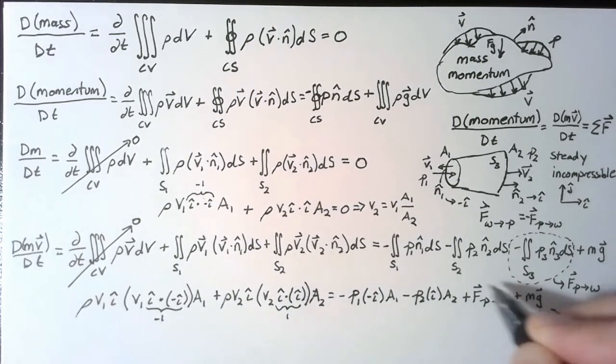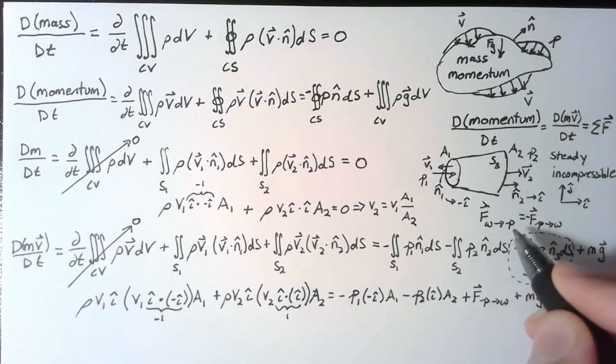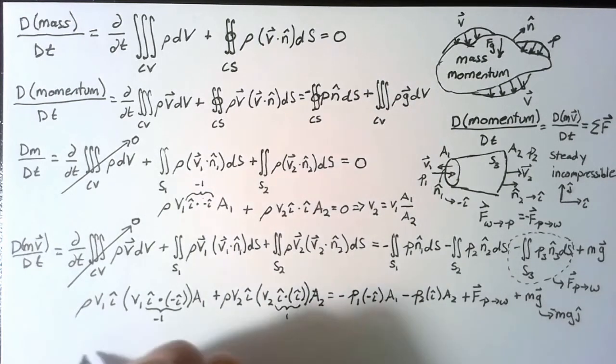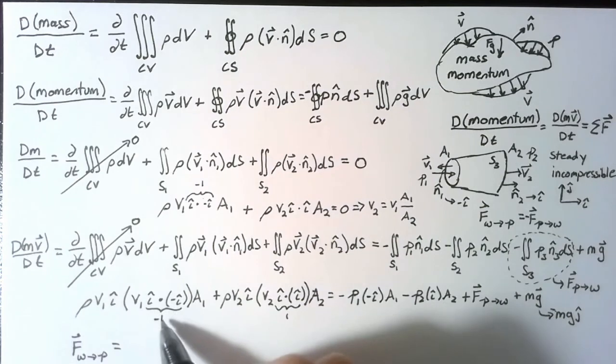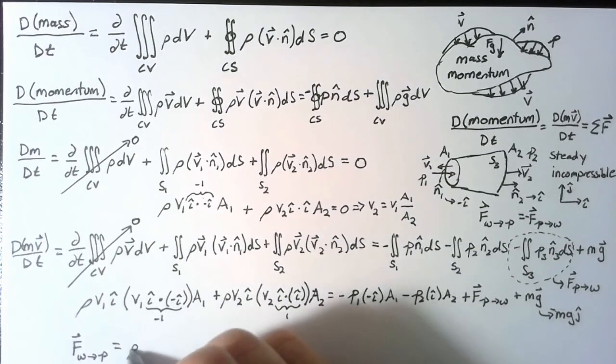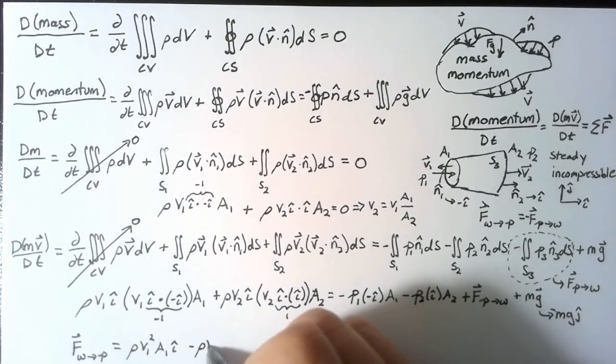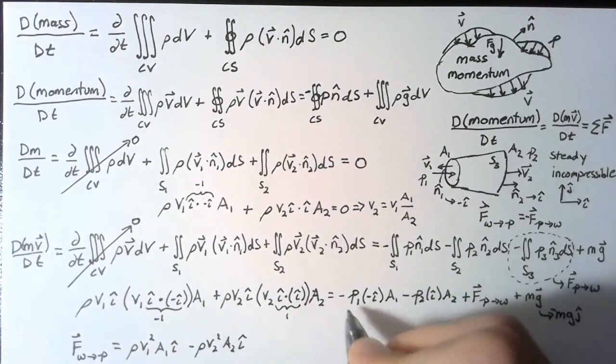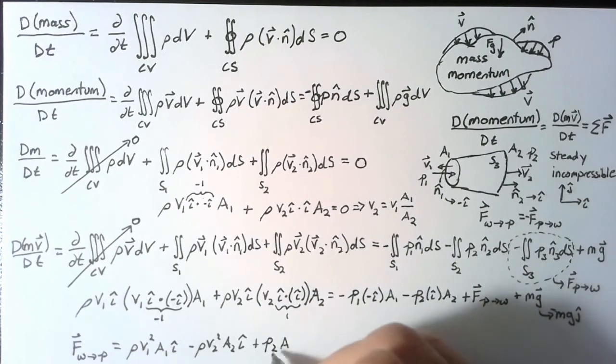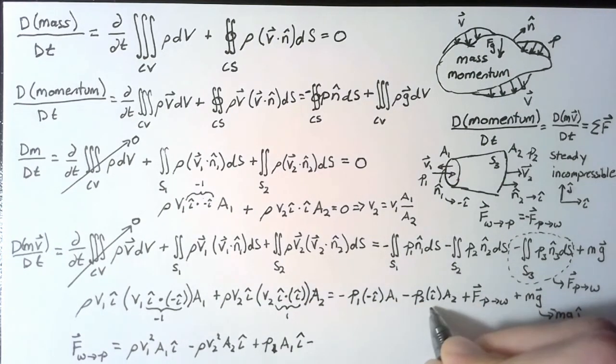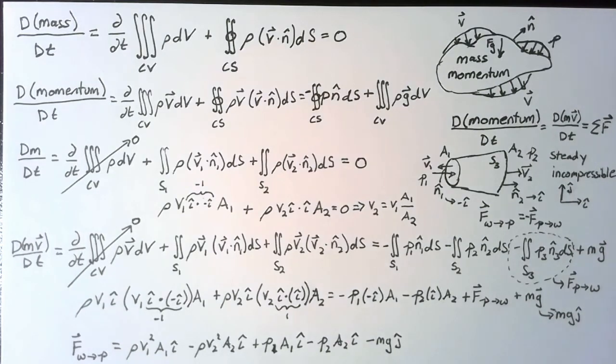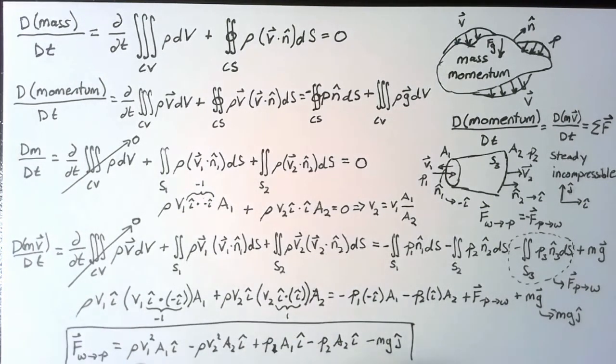Since this is the negative of the force of water on the pipe, I can move this to the left-hand side, and end up with the force of the water on the pipe is equal to. This negative lets me move it to the right-hand side. So we end up with rho v1 squared a1 in the i direction. Moving this positive value to the right-hand side, negative rho v2 squared a2 in the i direction. So two negatives makes a positive p1 a1 in the i direction, minus p2 a2 in the i direction. And then finally we have a negative mg j. And this is what we're looking for. This is the force of the water on the pipe.